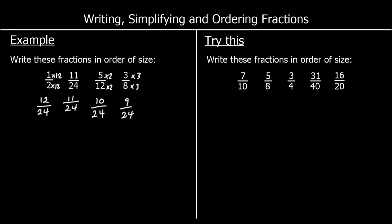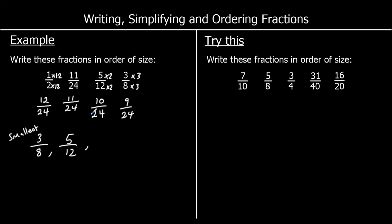So which is the smallest, which is the biggest? The smallest is nine out of 24. Nine is smaller than 10, and 10 is smaller than 11, and 11 is smaller than 12. So we're going to say three eighths is the smallest, then five twelfths, then 11 out of 24, and then one half.